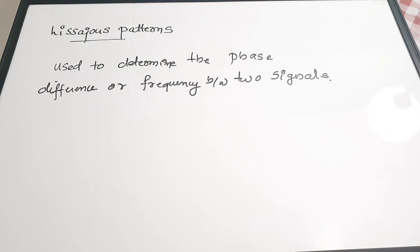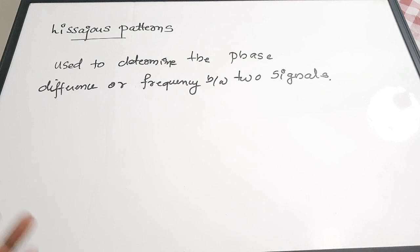The next important topic is Lissajous patterns, which are very important in diploma examinations. When two sinusoidal signals are fed into the CRO, the figure that appears on the screen is the Lissajous pattern. It is used to determine the phase difference or frequency between two signals — most commonly used for determining phase difference.